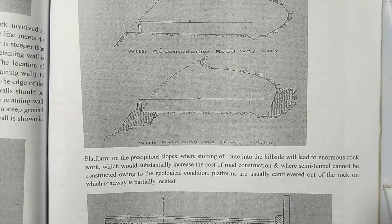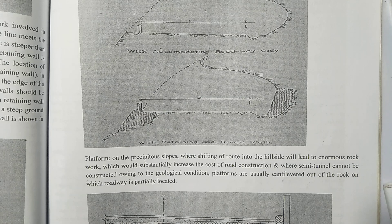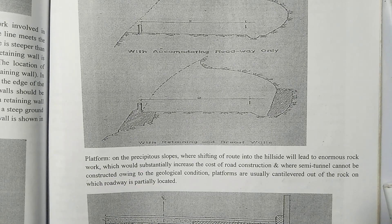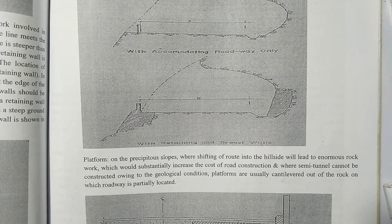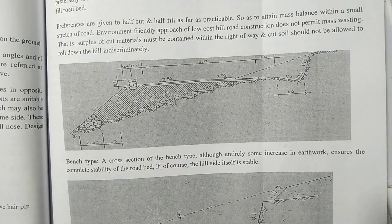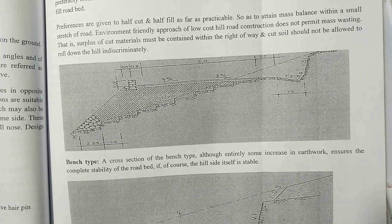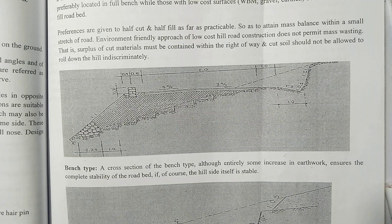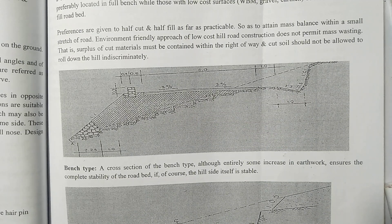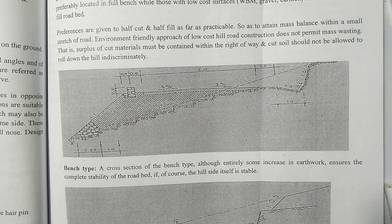Different structures are provided so that the final hill road is stable, economical, short, and environment-friendly. So I hope this video on the different types of cross-section in hill road was helpful for you. Thank you very much. Please do like, share, and subscribe to the channel.